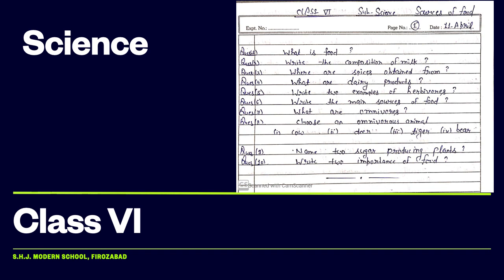In this chapter, the first thing is food. Do you know what is food? So I will tell you. A substance which is eaten daily to provide energy to our body is called food. So this is the simple definition of food.